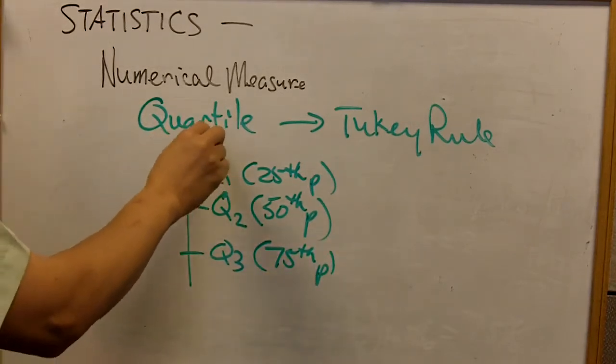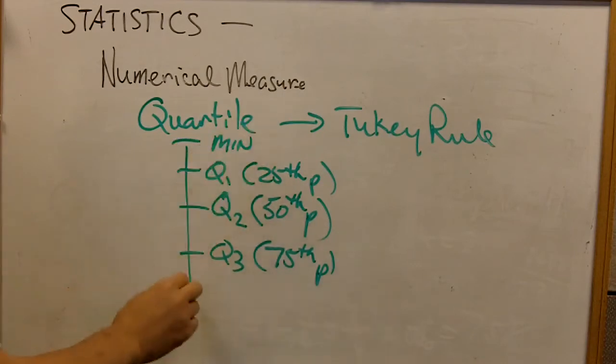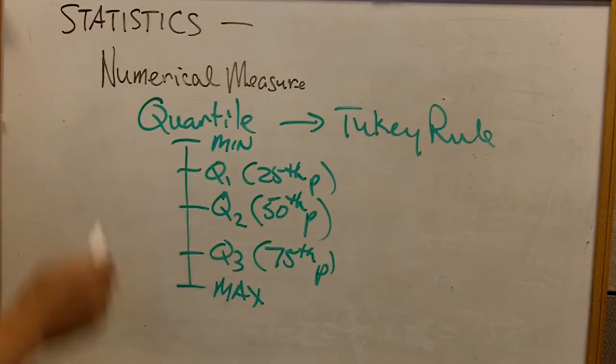We also have the minimum value and then the maximum value. All together, this is called the five-point summary because there are five points, and we summarize the data distribution using these five measures. Notice how we have not included the mean nor the standard deviation, but we're able to define the data distribution using these five points.